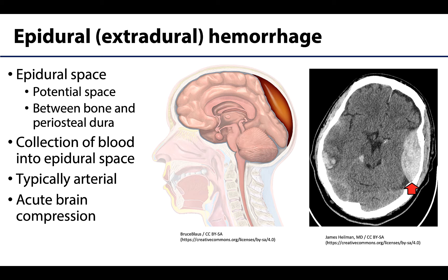Let's start with an epidural or extradural hemorrhage. Before we get into the clinical hemorrhage, we need to understand where the epidural space is located. This space is an example of what we refer to as a potential space, which does not exist in a normal healthy adult. It is going to be located between the bone and the periosteal dura — the part that's closest to the bone.